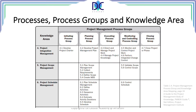In this table we have the knowledge areas in the vertical first column, starting from chapter four of the PMBOK, and in the horizontal row we have the different process groups. For example, for project integration management, in initiation we develop the charter; in planning we have all those different elements; in execution we have direct and manage the project work and manage knowledge; and in monitoring and control we perform integrated change control; and finally closing.